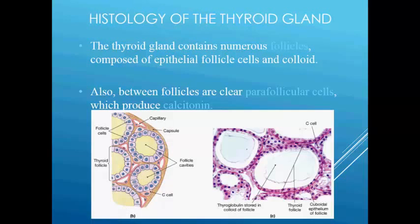Each lobule consists of numerous ovoid or spherical thyroid follicles or acini which are held together by connective tissues. The total number of thyroid follicles is about three million. Each follicle is lined by cuboidal epithelium that rests on the basement membrane, as you can see — this is the basement membrane and these are the cuboidal epithelium cells.